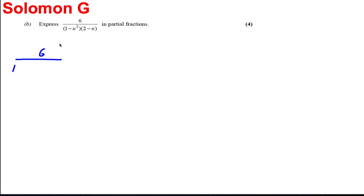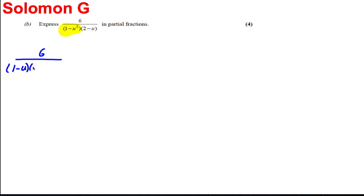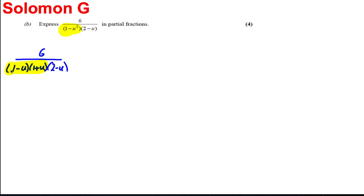Part b: express this in partial fractions. You should realize that 6 over (1 minus u²) involves a difference of two squares — it factors as (1 minus u)(1 plus u) — and we also have the factor (2 minus u). That was the key spot to see.